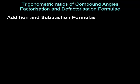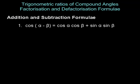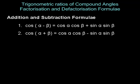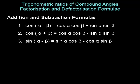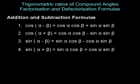Addition and subtraction formulae: Number one, cos of alpha minus beta is cos alpha cos beta plus sine alpha sine beta. Second, cos of alpha plus beta is cos alpha cos beta minus sine alpha sine beta. Number three, sine of alpha minus beta is sine alpha cos beta minus cos alpha sine beta. Number four, sine of alpha plus beta is sine alpha cos beta plus cos alpha sine beta.